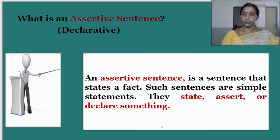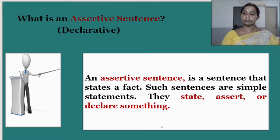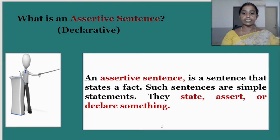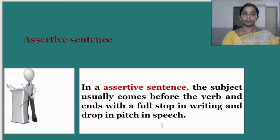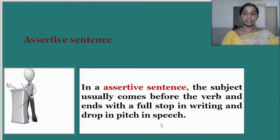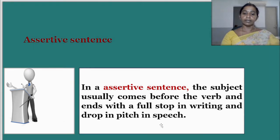What is an assertive sentence or declarative sentence? An assertive sentence is a statement or a sentence that states a fact. Such sentences are simple statements — they state, assert, or declare something. In an assertive sentence, the subject usually comes before the verb and ends with a full stop or period in writing, and a drop in pitch in speech.